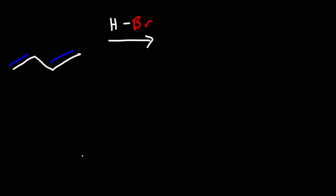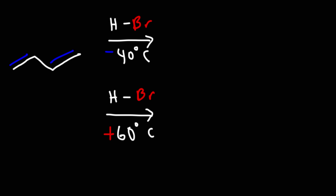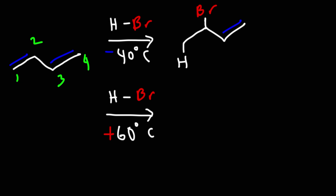We're going to react it under two different conditions: at low temperature, let's say negative 40 degrees Celsius, and at high temperature, which we'll say 60 degrees Celsius. At low temperature, you're going to get something called the kinetic product. The hydrogen is going to add on carbon 1 — let's call this carbon 1, 2, 3, and 4. Due to the symmetry of this diene, these two alkenes are equally reactive. So the hydrogen goes on carbon 1, the bromine goes on carbon 2, and we have a double bond between 3 and 4. This is called the 1,2-addition product because HBr added to carbons 1 and 2. This is also called the kinetic product because it forms faster.